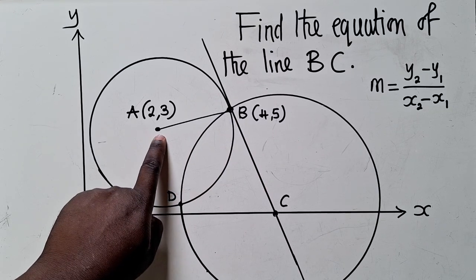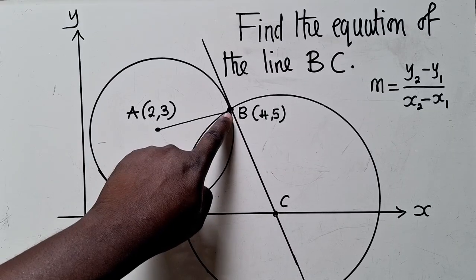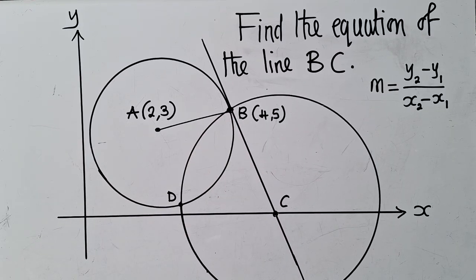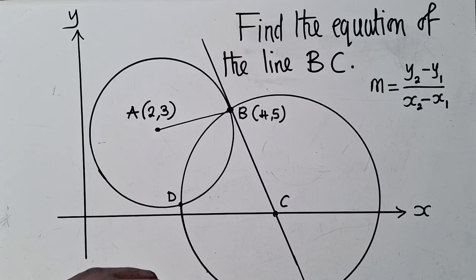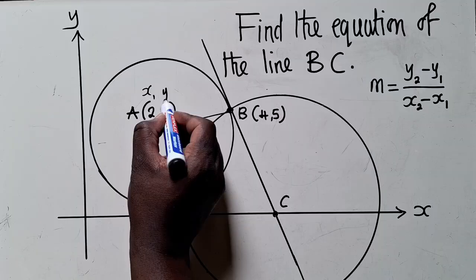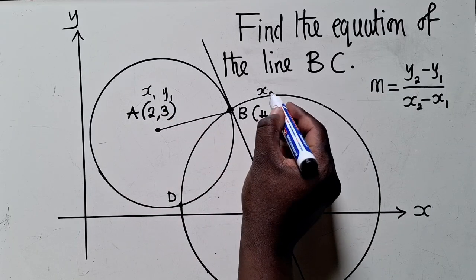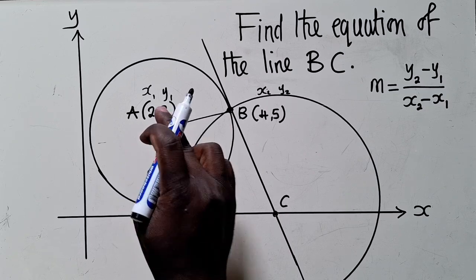Look at this. It's coming from the center, and it's touching this line right here at the circumference. So we can find the gradient of this. We come and use the idea of perpendicular. We shall say this is X1, Y1, X2, Y2.